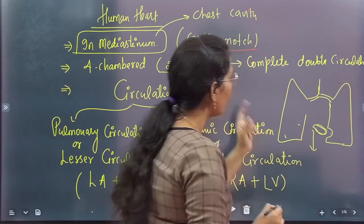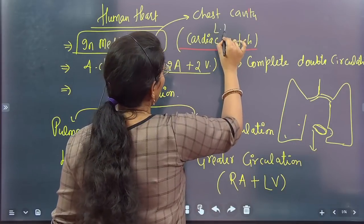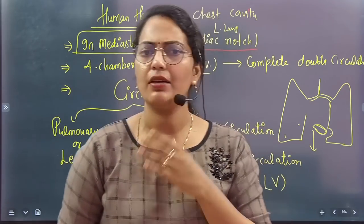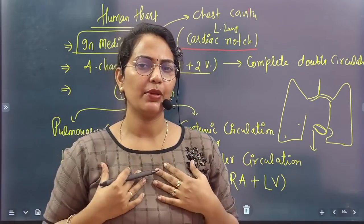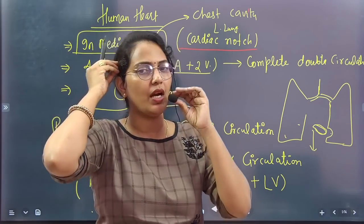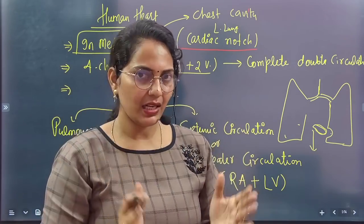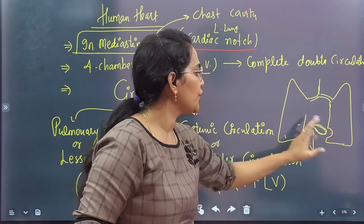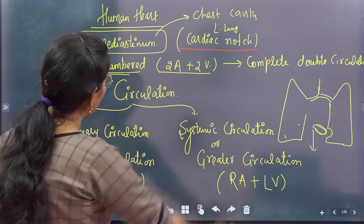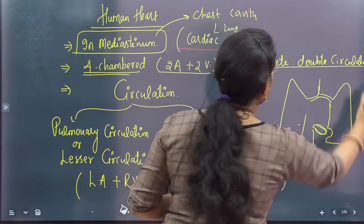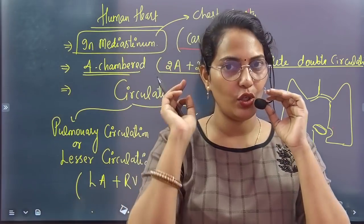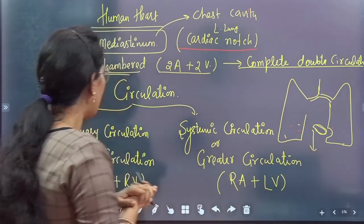The cardiac notch is located in the left lung. The left lung is slightly on the left side, and the depression on the left side is called the cardiac notch. Mediastinum means the cavity beneath the two lungs — we call it the chest cavity. The heart has two auricles and two ventricles, with complete double circulation because here oxygenated and deoxygenated blood do not mix.